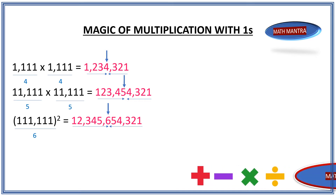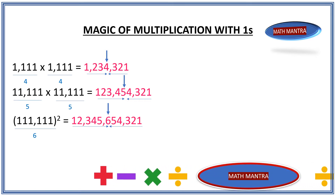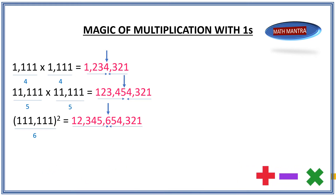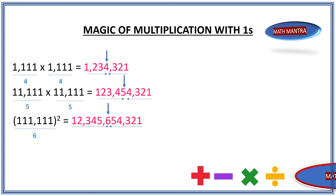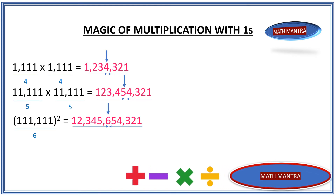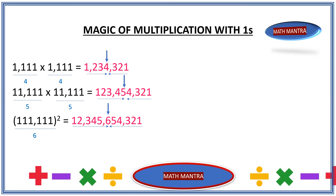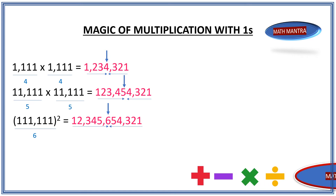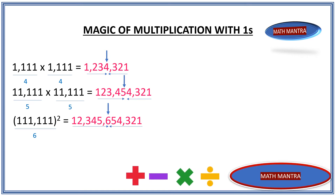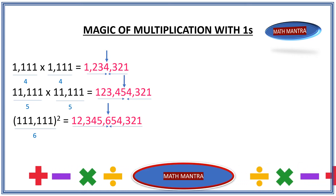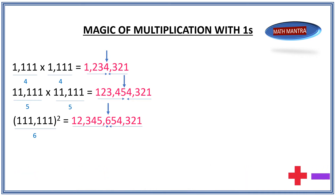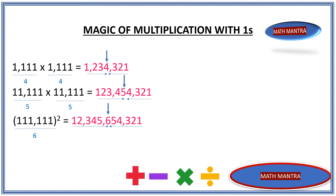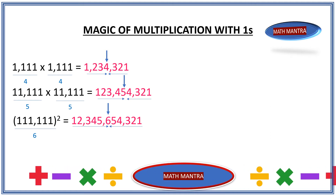So far we've learned a pattern that applies to finding the square of any number made entirely of ones. But what if you have an unequal number of digits in the multiplication? Well, there is another pattern we can use for unequal digit counts. It's not quite as simple, but I promise you'll still be able to find the answer in less than 10 seconds.